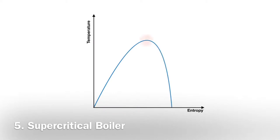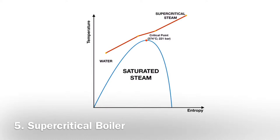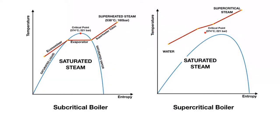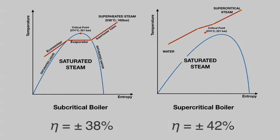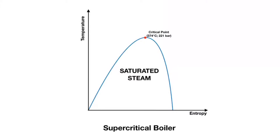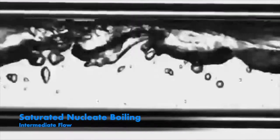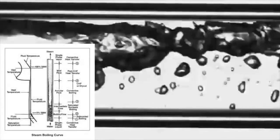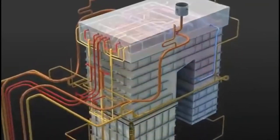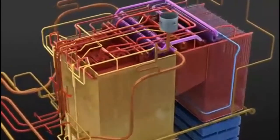Supercritical boiler. If a boiler works above its critical point, it is called a supercritical boiler. Supercritical boilers have better fuel efficiency than subcritical boilers — around 42% design efficiency, while subcritical boilers can only reach 38%. This is due to the impossibility of forming saturated steam in the supercritical cycle. Above the critical point, water does not experience the nucleate boiling phase — the transition from liquid to steam. One main characteristic of supercritical boilers is the absence of a steam drum, which is present in subcritical boilers to separate water from saturated steam.